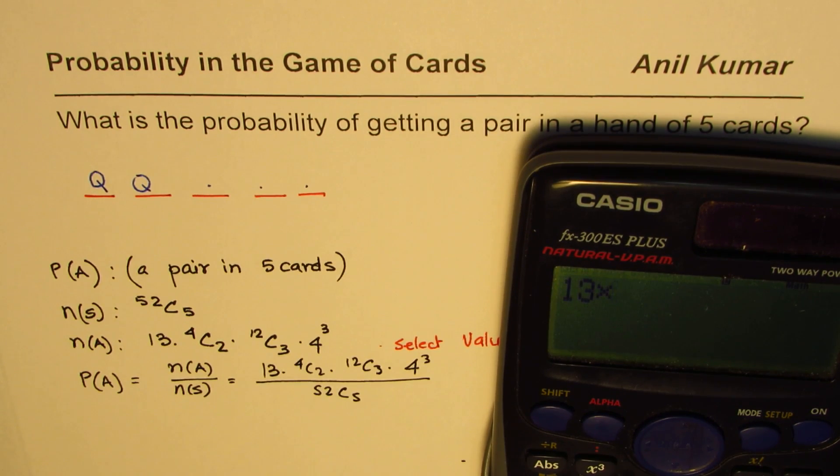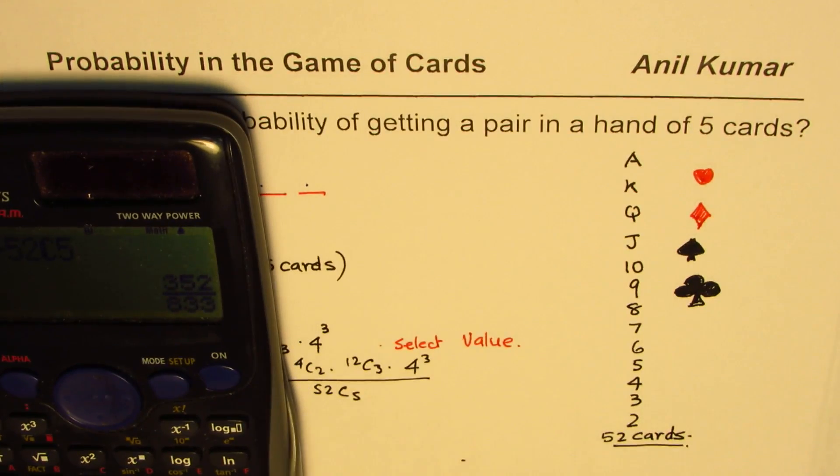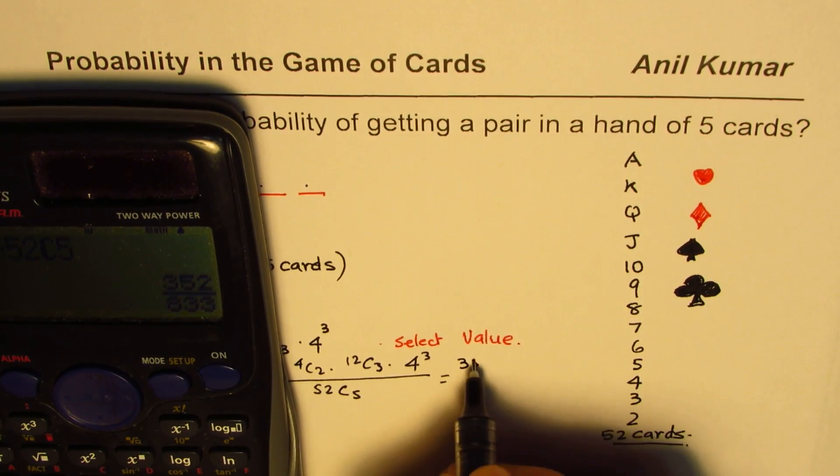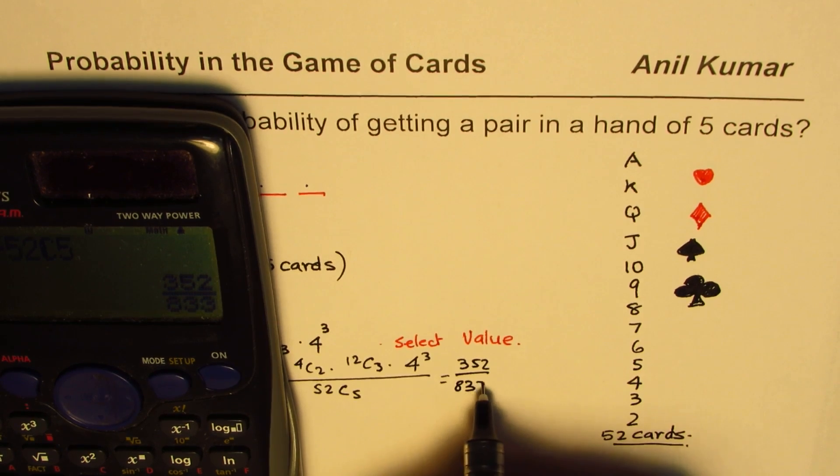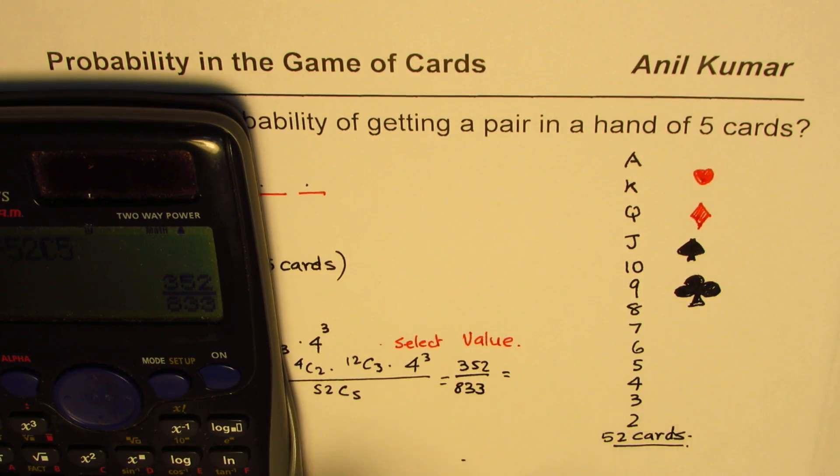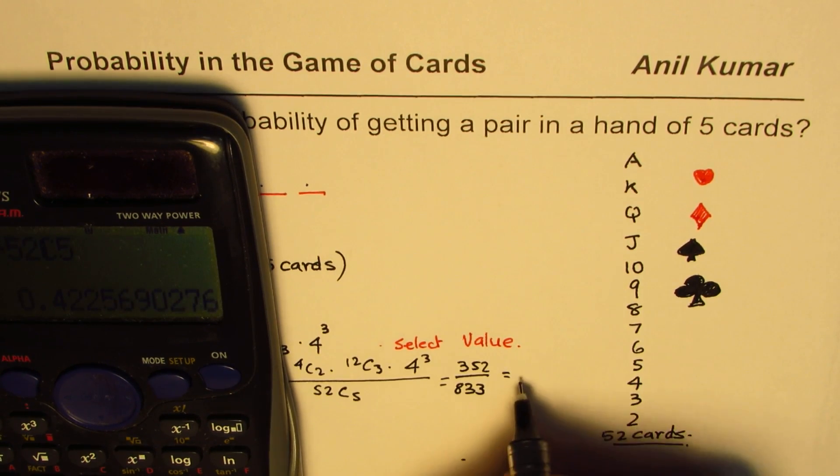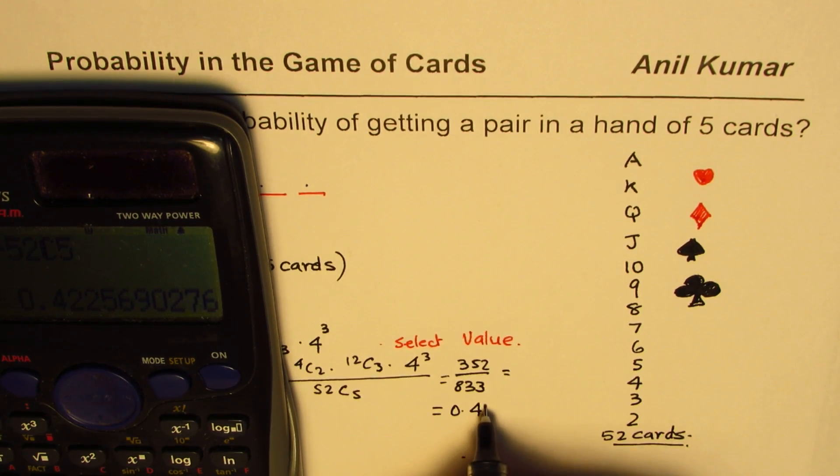This equals 352 over 833, and in decimals you could write this as equal to 0.4225. That could be the decimal value for such a selection.